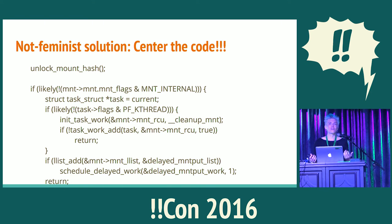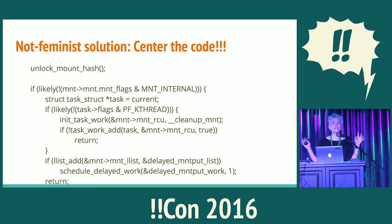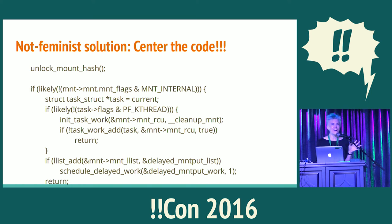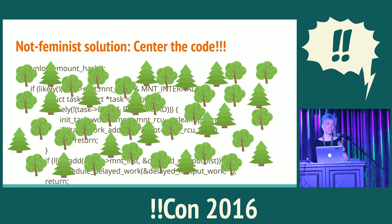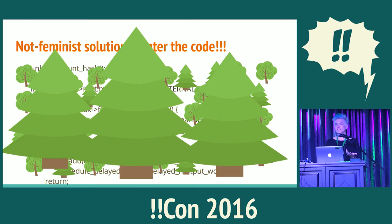There were a bunch of other non-feminist solutions proposed, and they all seemed to center the code and the file system structures. One example: people said let's keep a big list of inodes in memory with updated A-Times that we should write out eventually, and wait for the best possible moment — when the system is running out of memory — and then write them all out to disk at once. All storage loves small random writes. That got shot down when calculations showed you could keep storage busy for several minutes doing this. In general, I felt these solutions were missing the forest — what users actually wanted to do with their file system — for the trees, which were the file system data structures and the code.